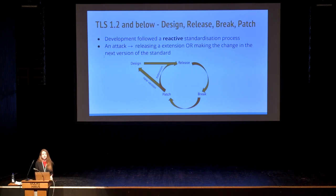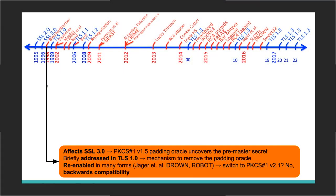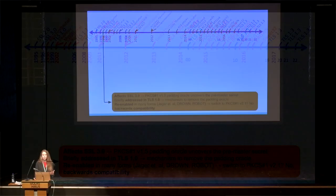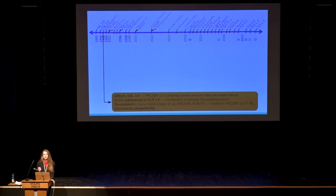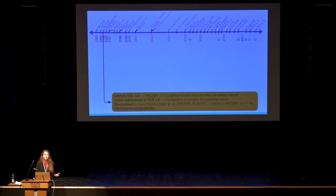Some high-profile attacks illustrate this. In 1998, Daniel Bleichenbacher released an attack against RSA encryption when the PKCS version 1.5 encoding scheme was used, allowing an attacker to exploit a padding oracle and uncover the pre-master secret for TLS and hence the connection keys. This vulnerability was briefly addressed in TLS 1.0 with a two-paragraph note, repeated in TLS 1.1 and 1.2, but the attack has been re-enabled in various forms in subsequent years. It would have been more prudent to switch to PKCS version 2.1, available in 2002, but this was not done to maintain backwards compatibility with TLS 1.0.